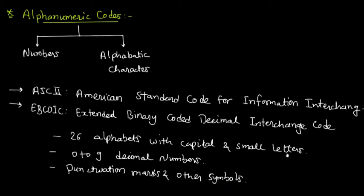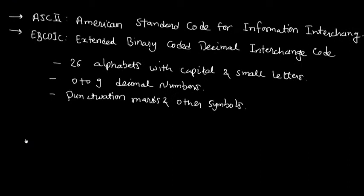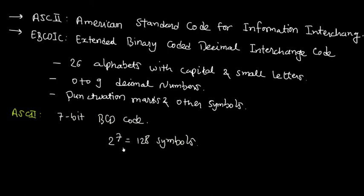The ASCII code is a 7-bit BCD code in which the decimal digits are represented by binary coded decimal numbers. It can represent 2 raised to 7, that means 128 symbols.